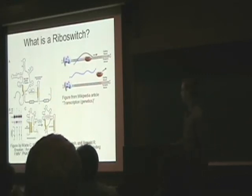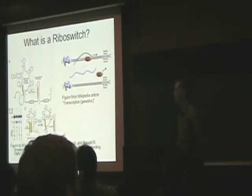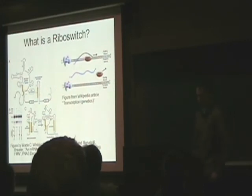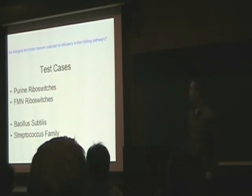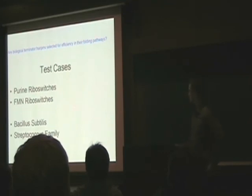We immediately see an issue: we have a roughly 50-nucleotide transcriptional terminator, but at a biological transcription rate of 50 nucleotides per second for a typical prokaryote, we have to make a decision as to whether or not we're going to terminate within this short transcriptional terminator region before reaching the poly-uracil site. What we would like to know is whether these biological terminator hairpins are selected for efficiency in their folding pathways, or selected to form quickly rather than thermodynamically. As test cases, selected based on their presence in the literature, we decided to study thiamine and FMN riboswitches in Bacillus subtilis and the Streptococcus family.